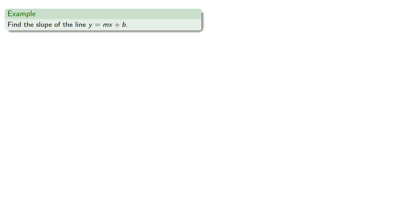Now, part of the value of algebra is that we don't have to work with numbers, we can work a little bit more abstractly. So let's find the slope of the line y equals mx plus b. Let's find two points.